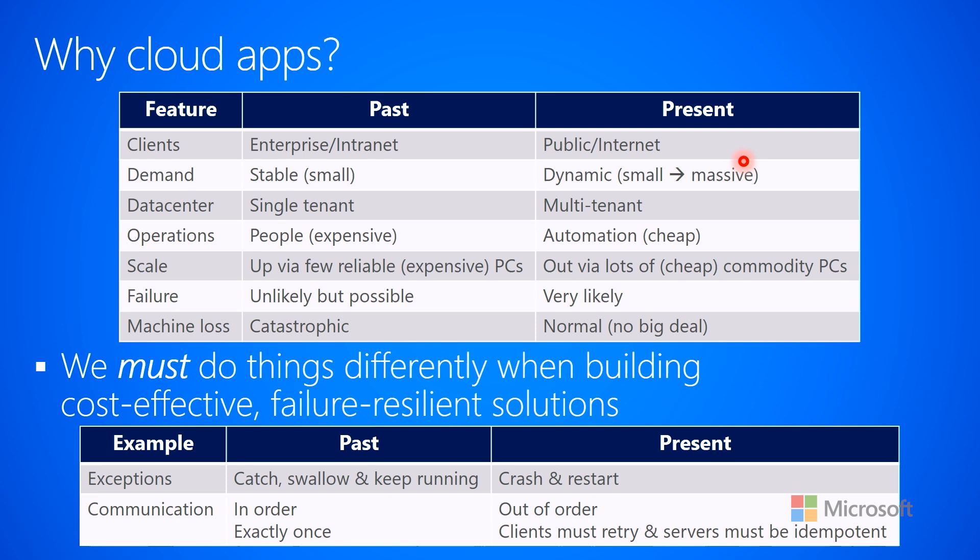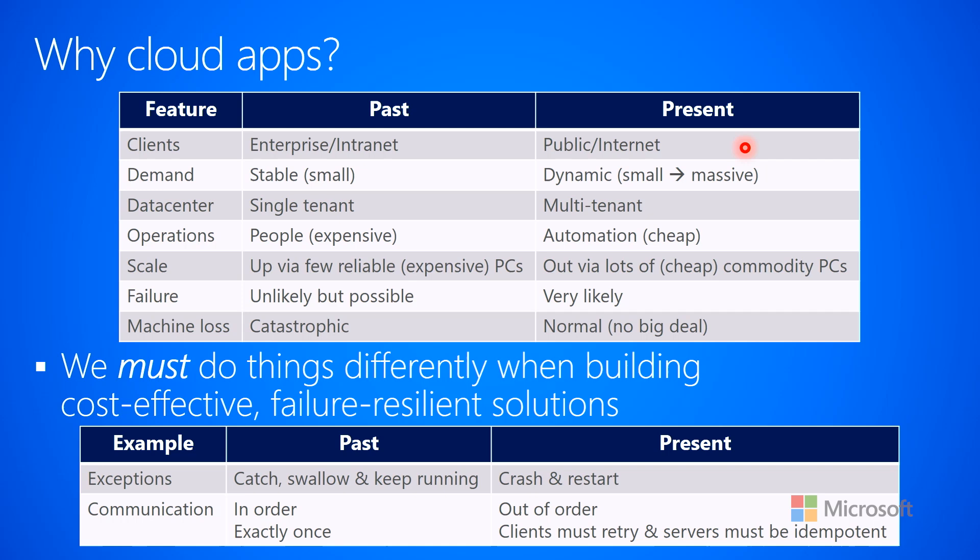Let's talk about clients. In the past, we used to think that the clients of our services were the enterprise or the intranet — generally pretty small scale. At Microsoft, for example, they have 100,000 employees, and maybe some partners too, but we're generally not talking millions or tens of millions of people. Today, we're building services accessed by the public at large — a worldwide set of people from lots of different countries. The scale is wildly different now.